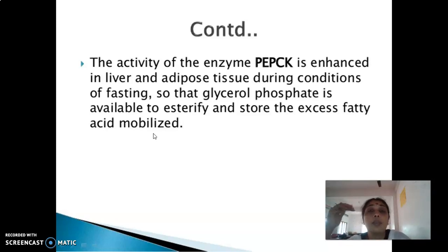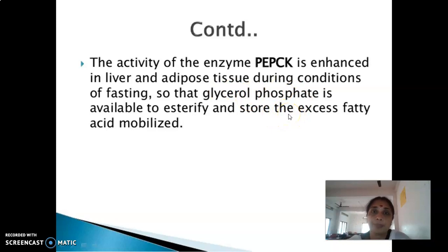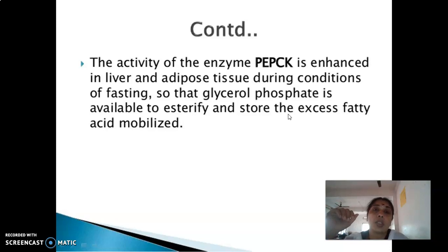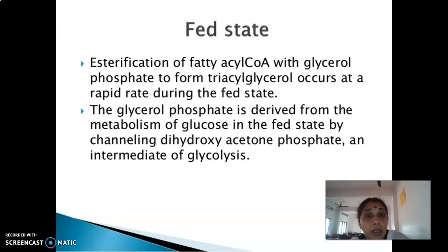What is gluconeogenesis? It is the synthesis of glucose from non-carbohydrate sources. One of the most important enzymes in gluconeogenesis is phosphoenolpyruvate carboxykinase (PEPCK). PEPCK will be activated in the liver and adipose tissue, and glycerol-3-phosphate is synthesized from DHAP because the person is already in a fasting condition. There is no dietary glucose available, but glucose can be synthesized via the gluconeogenic pathway, and that is how DHAP will be formed. This is an entirely different mechanism compared to the fed state.